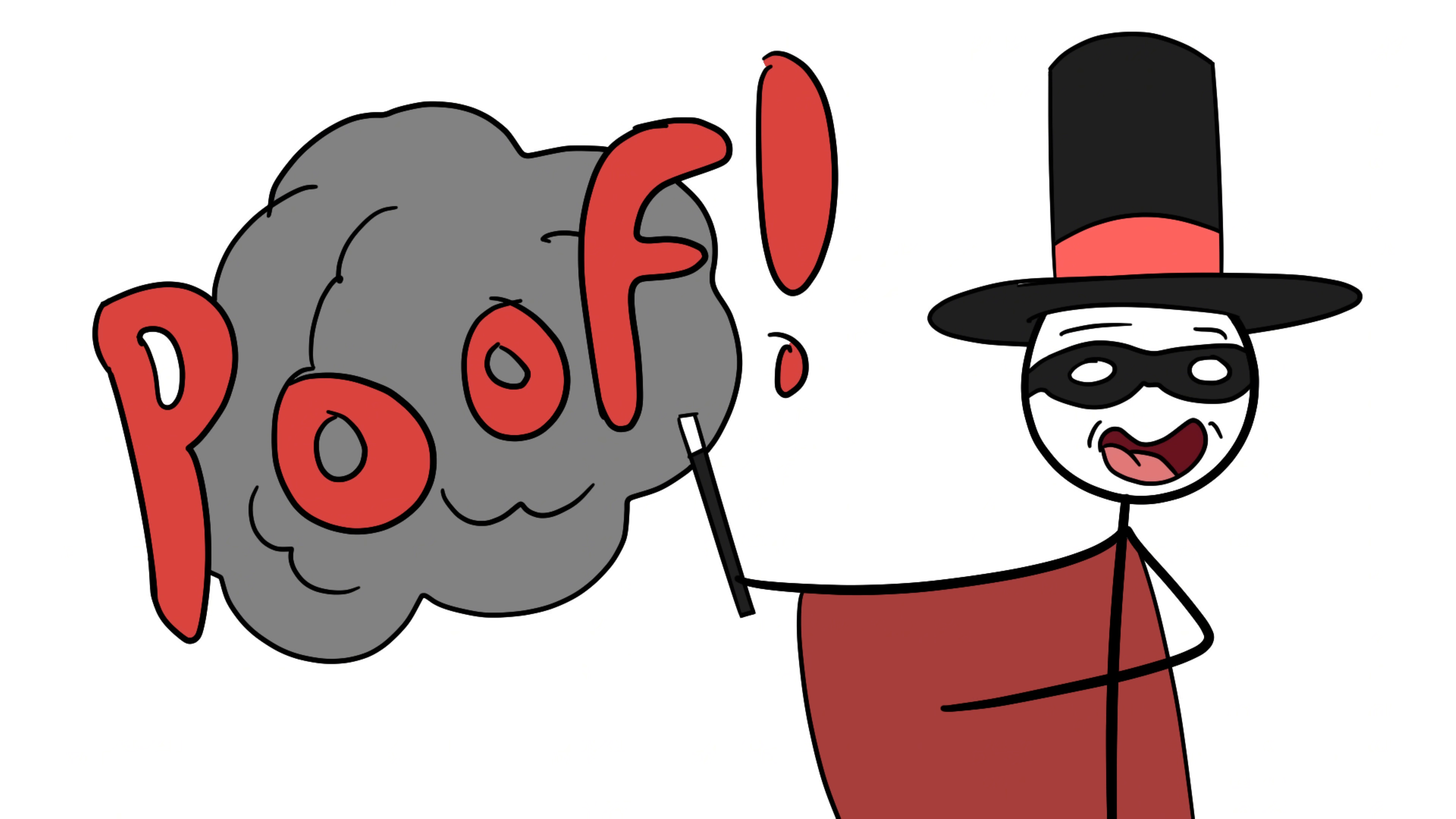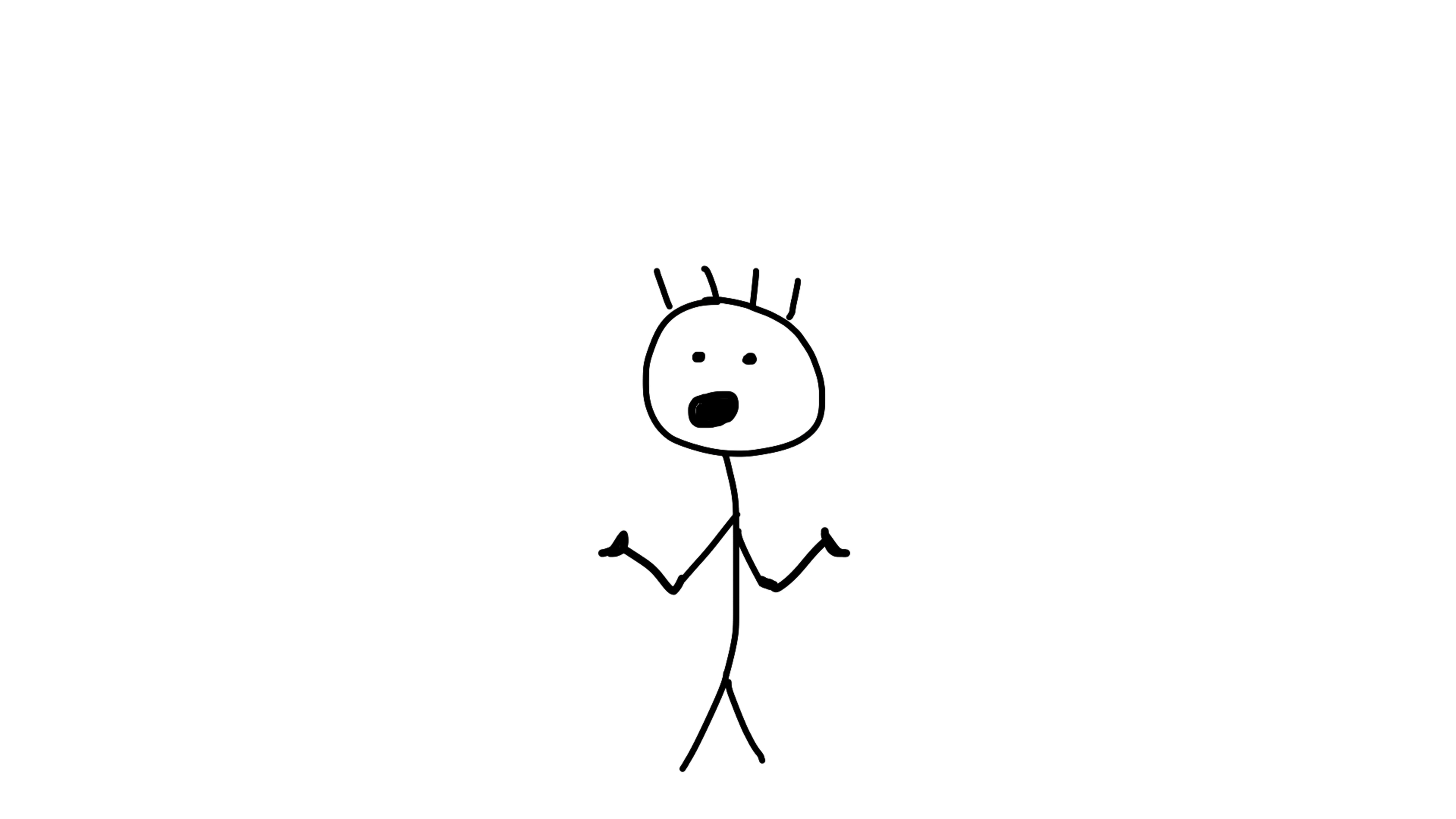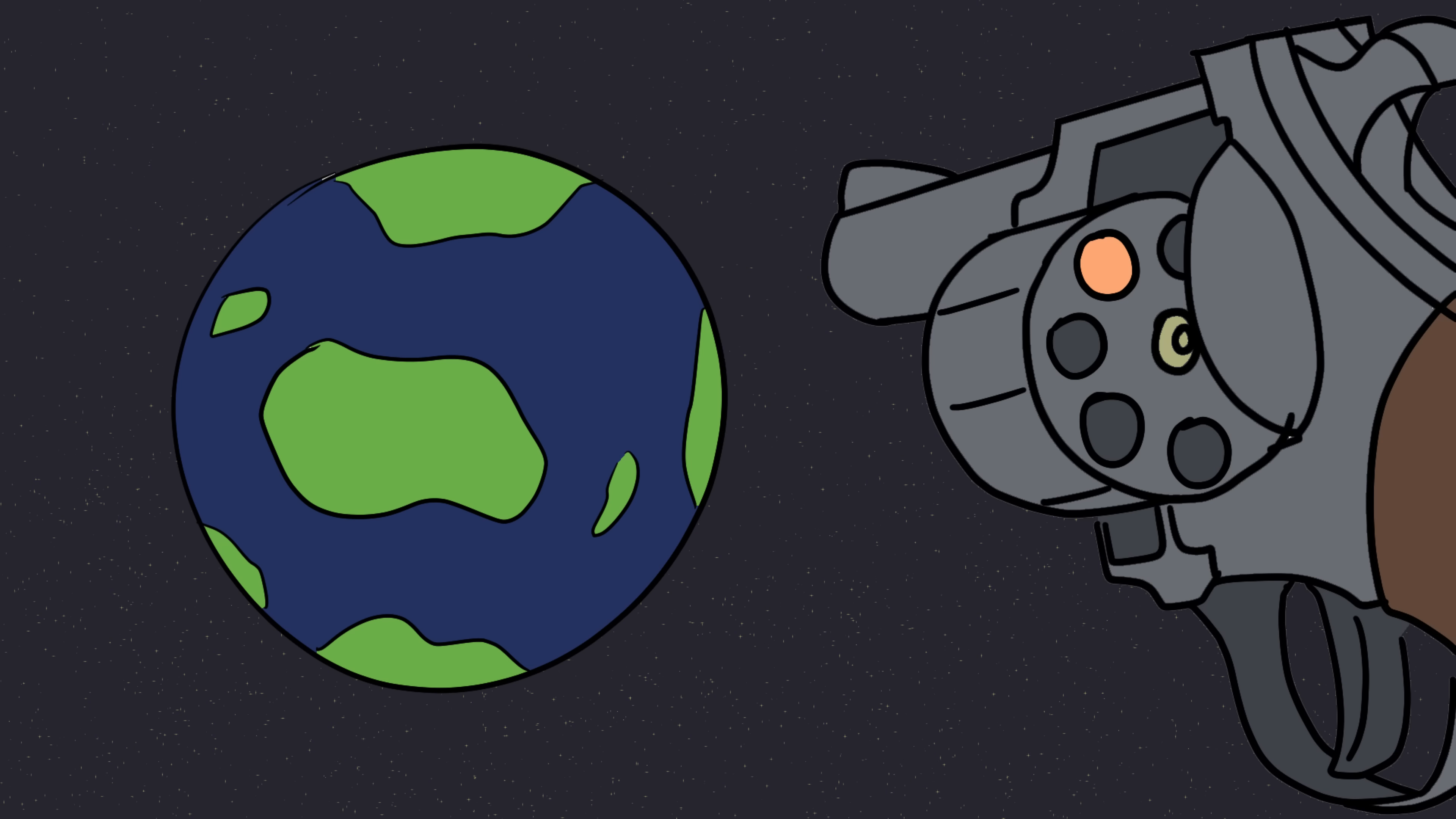If Tunguska had happened just a few hours later, the blast would have leveled St. Petersburg, killing hundreds of thousands. Instead, it hit one of the emptiest spots on Earth. To this day, scientists studied the event not just to understand what happened, but to prepare for the future. Because Tunguska isn't just history, it's a reminder that the Earth is still vulnerable to cosmic roulette.